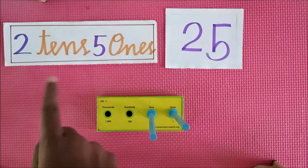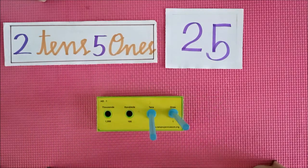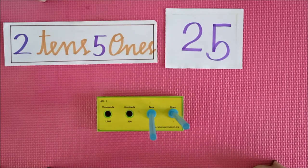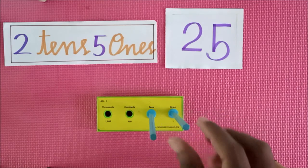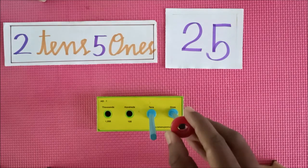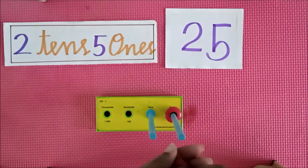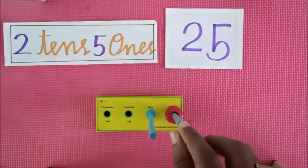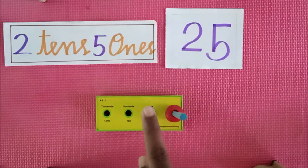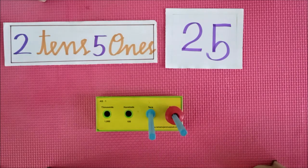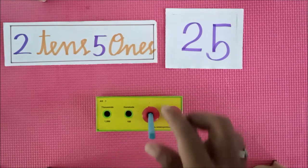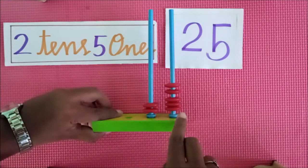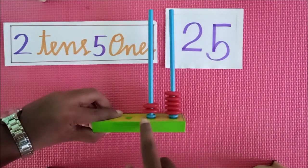See here — what are you seeing? 2 tens and 5 ones. That means what number? 25. 5 represents 1s and 2 represents 10s. How many beads do we keep in 1s place? 5 beads: 1, 2, 3, 4, 5. And how many in 10s place? 2 beads: 1, 2. This represents 25 — 2 tens and 5 ones.